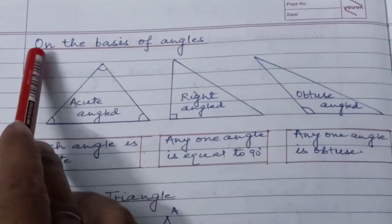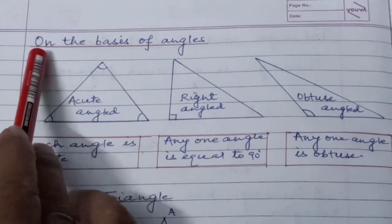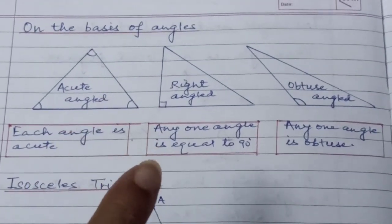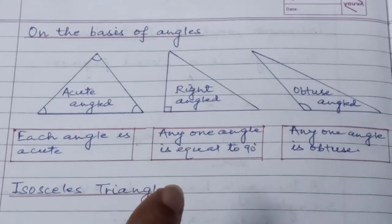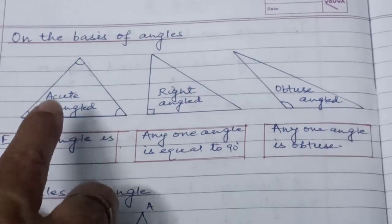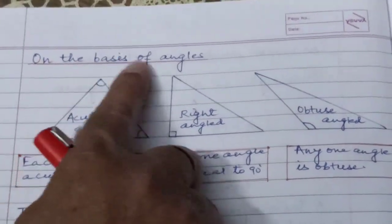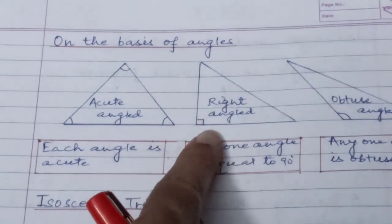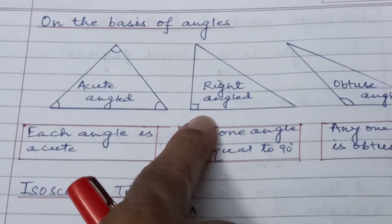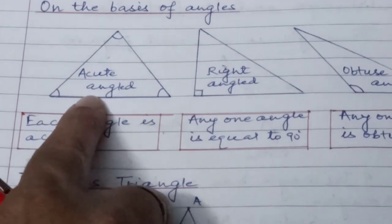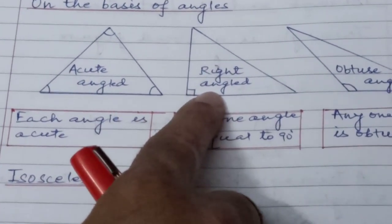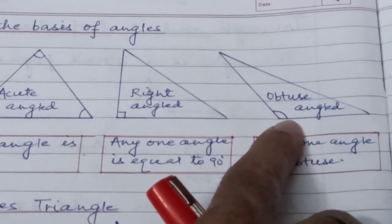Now the next topic is classification on the basis of angles. On the basis of angles, triangles are also of three types: first, acute angle triangle; second, right angle triangle; third, obtuse angle triangle.